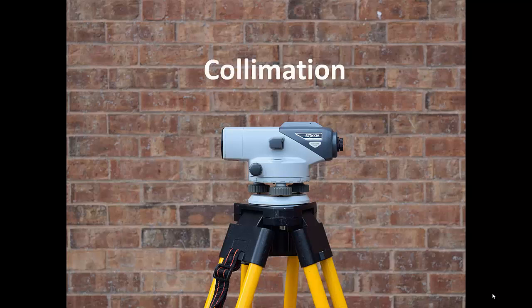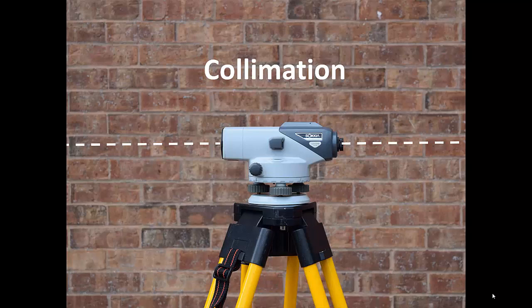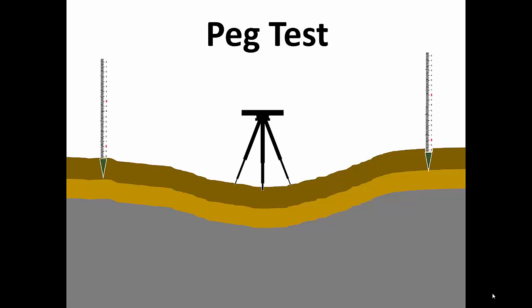Collimation is the technical term for the adjusting of the line of sight in an optical device. To test this collimation of an automatic level, we commonly perform a PEG test. The PEG test is designed to determine whether the instrument line of sight is truly horizontal.